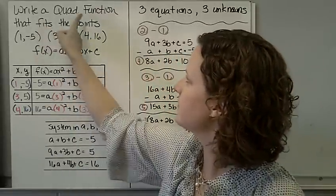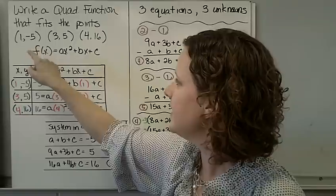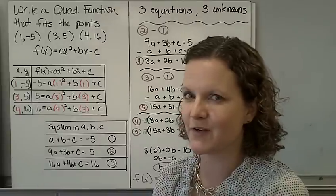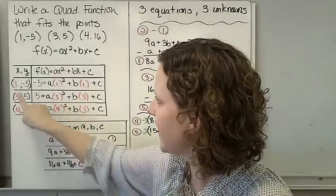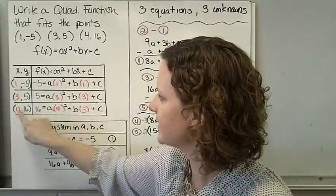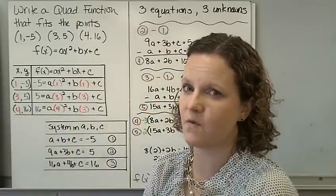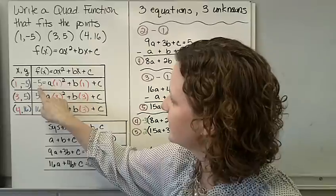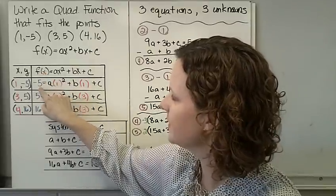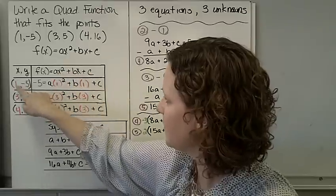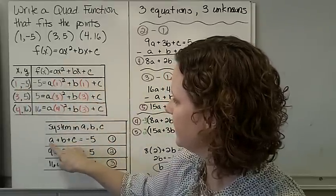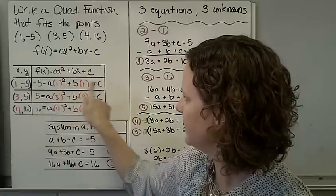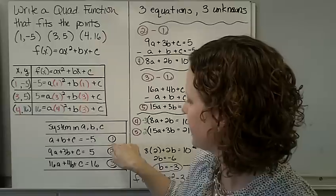Our first example: we're going to write a quadratic function that fits these points. There's our quadratic function in standard form. I've color-coordinated this to help you out — those are all 3 points: x and y, x and y, x and y. I'm going to plug those into the standard form, and then we're going to have 3 equations with 3 unknowns to solve for. The first point gives us: f(x) = y = negative 5, x = 1, so 1 squared and 1. Simplified: A plus B plus C equals negative 5. That's our first equation.